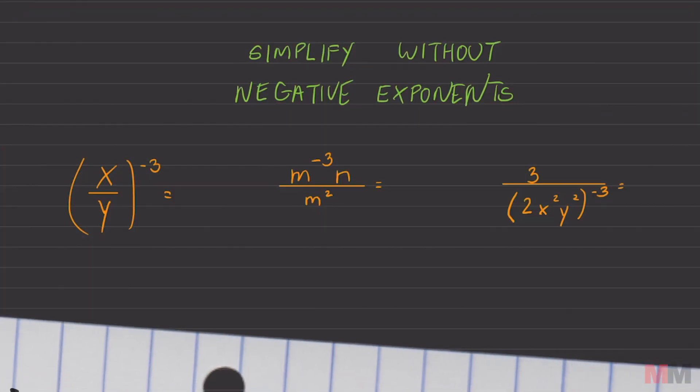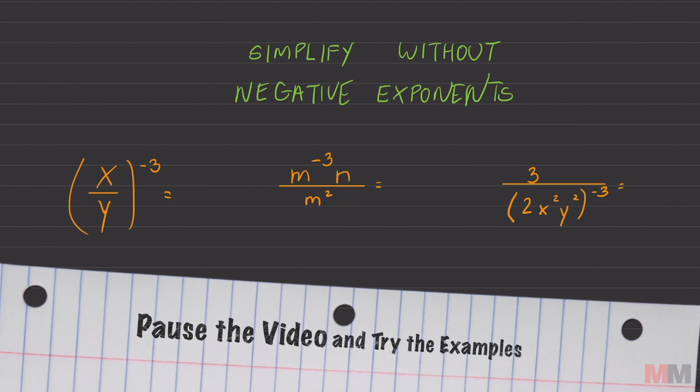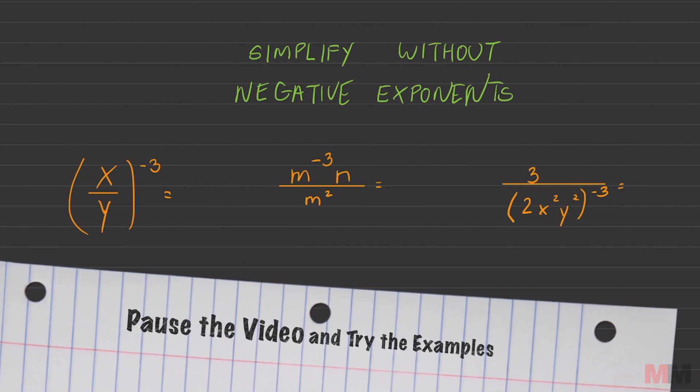I want you to simplify these questions below. Remember, you don't want any negative exponents. And if they do have it, whether it's a bracket or a variable or just a number, all you got to do is switch its positions. Pause the video, try this out. And when you are done, check back and play the video for the answers.